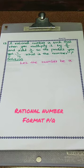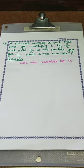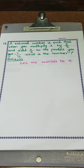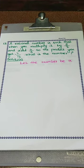Next problem. A rational number is such that when you multiply it by 5 by 2 and add 2 by 3 to the product, you get minus 7 by 12. What is the number? We know a rational number format is P by Q. We have to assume one rational number as x. We multiply x by 5 by 2 and add 2 by 3, and we get minus 7 by 12. We need to find x.